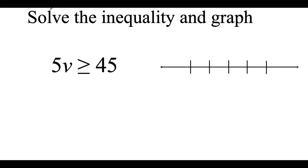We've got 5v is greater than or equal to 45. Having 5v where there's no operational symbol written between the 5 and the v really means 5 times v. Anytime we're solving we want to use inverse operations to help us out. So the opposite of multiplying by 5 would be dividing by 5, and we're going to divide both sides by 5, giving us v is greater than or equal to 9.